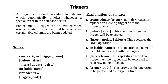FOR EACH ROW means the trigger will execute for each row being affected — one row at a time is executed. Then the trigger body provides the operation to be performed when the trigger is fired.